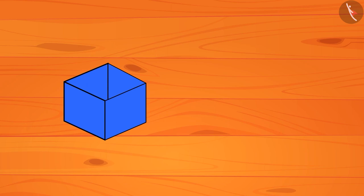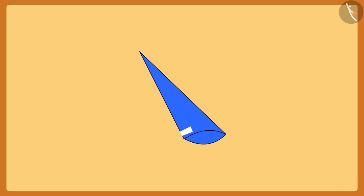You thought it right. We can make many more shapes like a cone. Children, making a cone shape is very easy. For that, we will have to take a piece of paper and fold it like this and stick it.